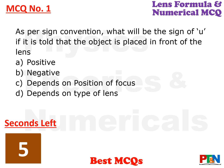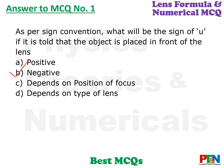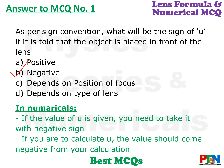MCQ 1: As per sign convention, what will be the sign of U (object distance) if the object is placed in front of the lens? Options: positive, negative, depending on position of the focus, or depends on type of lens. The answer is negative. The value of object distance will always be negative if the object is placed in front of the lens. So in any numerical, wherever you are given the value of object distance, take it with a negative sign. The value of U should always come out negative — be careful about it.